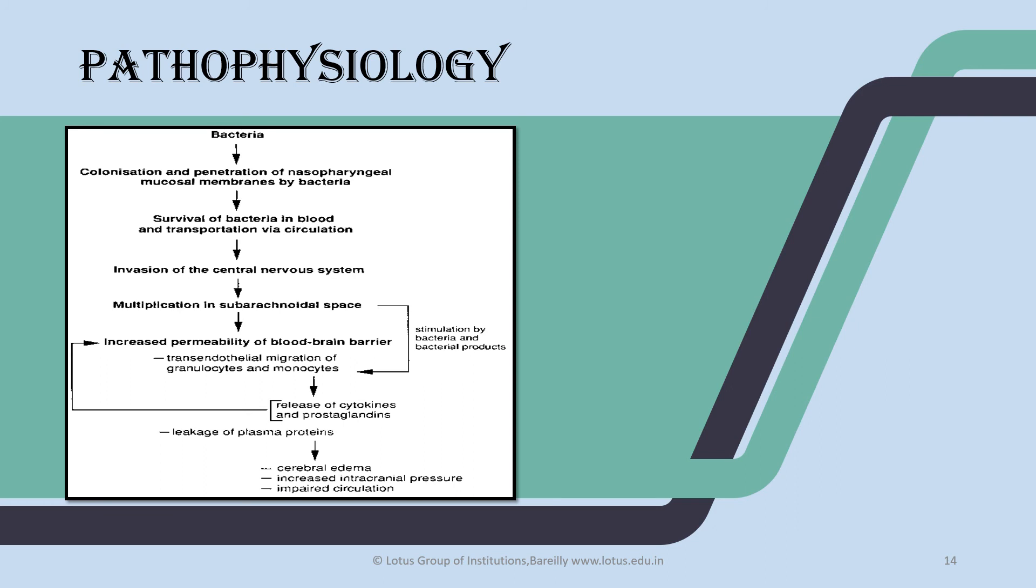The main cause is WBC release. In bacterial infection, we have more than 100 WBCs with 90% polymorphonuclear neutrophils. In virus, 10 to 10,000 WBCs with 50% lymphocytes and 20% PMNs. In fungal infection, 10 to 500 WBCs with less than 50% lymphocytes.